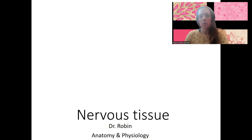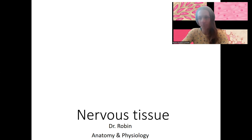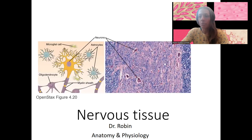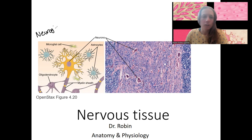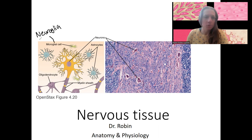Nervous tissue is one of those tissue types that's made up of more than one cell type. The primary cell type — and by primary, I mean the most important in terms of its function — is going to be neurons. However, there are other cell types: neuroglia. These over here are all neuroglia. This is just a schematic and this is a histology picture, but these that are labeled over here are all types of neuroglia.